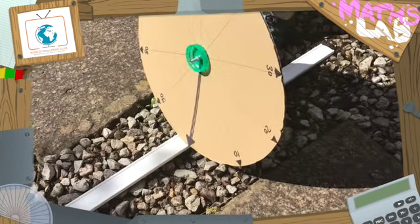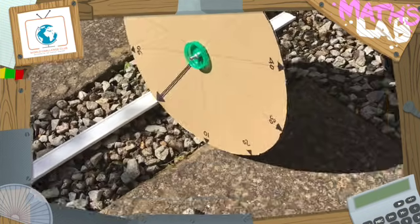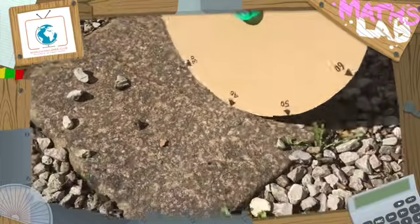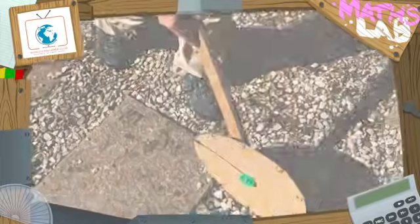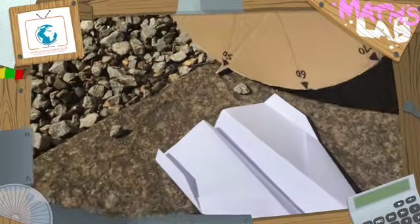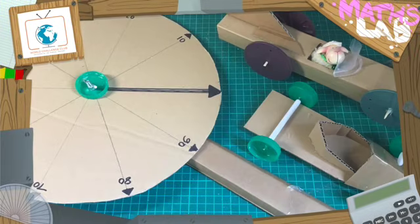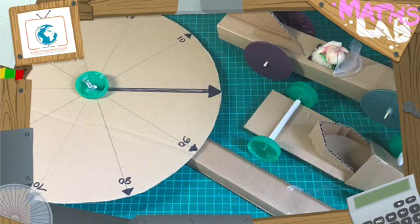Start measuring from your zero mark. Each full revolution is one meter. You can work out the extra distance using the 10 centimeter scale. So there you go, your own homemade 1 meter trundle wheel, and you can use this for lots of distance measuring experiments.